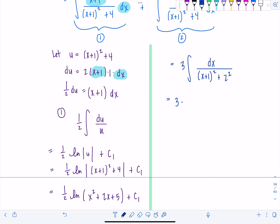You just got to put this to memory. So this is 3 times. We're going to have 1 half tan inverse of x plus 1 over 2. I'm going to say plus c2. And then we could just clean it up. This is 3 halves tan inverse of x plus 1 over 2 plus c2. That one was easier.